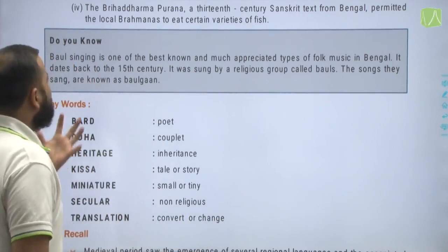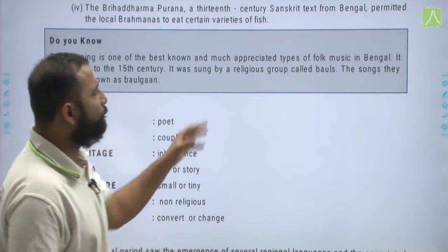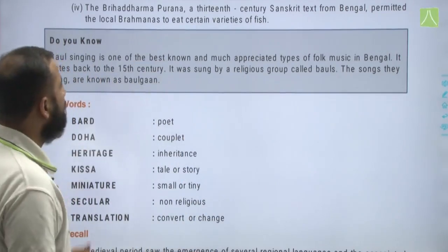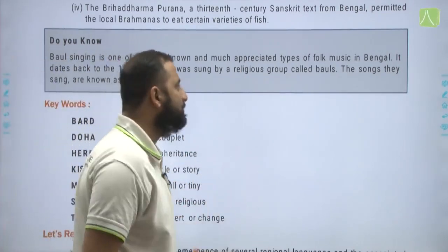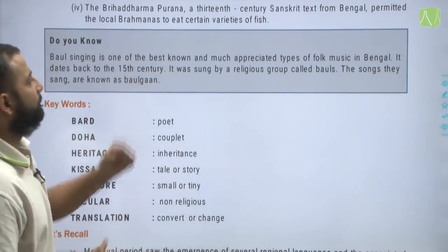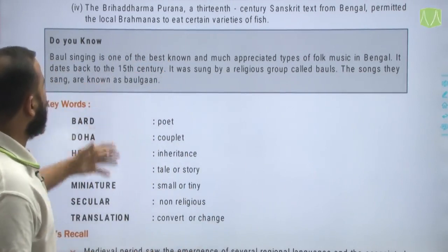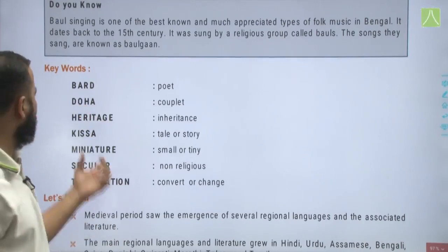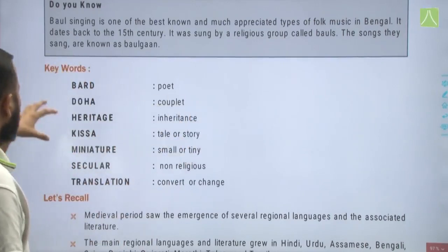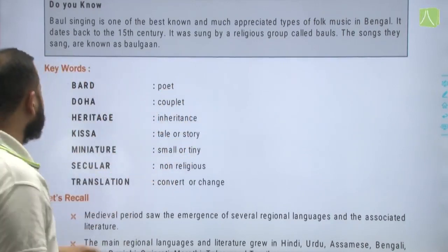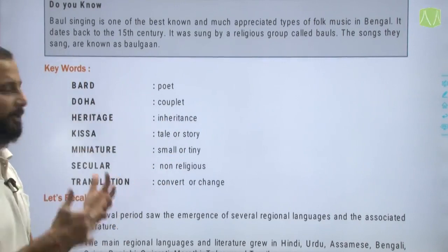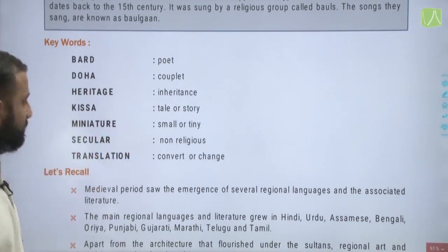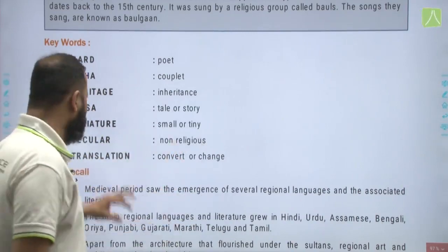Baul singing is one of the best-known and much-appreciated types of folk music in Bengal, dating back to the 15th century, sung by a religious group called Bauls. The songs they sang are known as Baul Gaan. Key vocabulary: Baad — a poet; Doha — a couplet; Heritage — inheritance; Kissa — a tale; Miniature — small or tiny; Secular — non-religious; Translation — to convert or change.